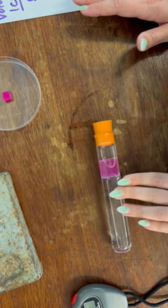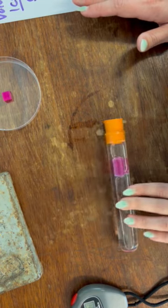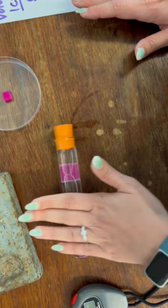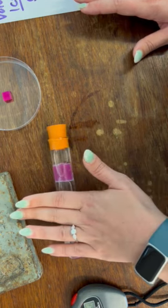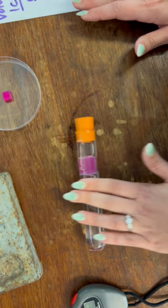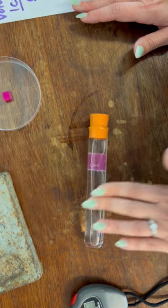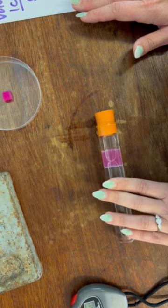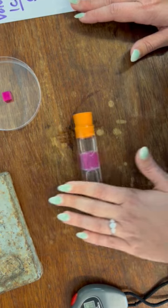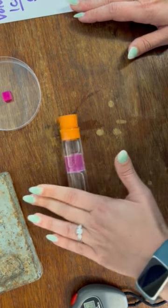So, remember, phenolphthalein is an indicator that turns colourless in the presence of acid. So, my acid is going to diffuse into my agar, and it's going to turn it colourless, or as colourless as it can get. You can already see that beginning to happen. The cuboid shape is getting smaller and smaller, the pink cuboid.